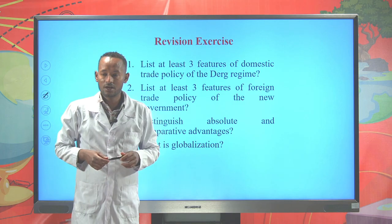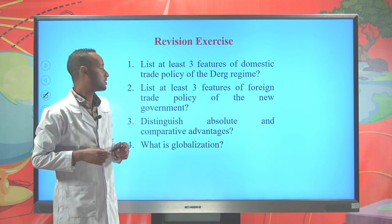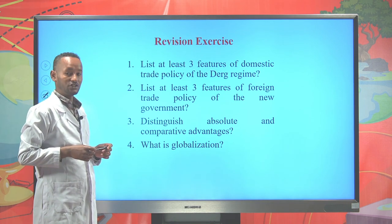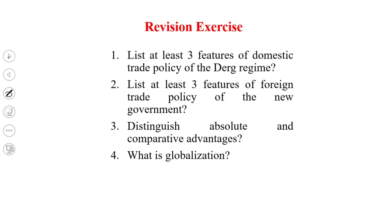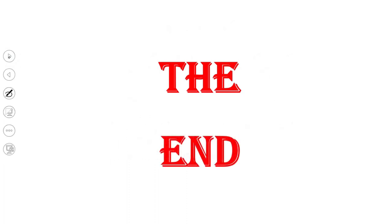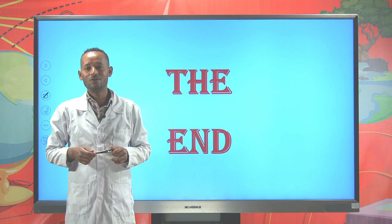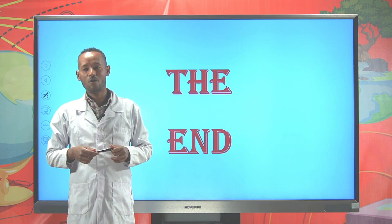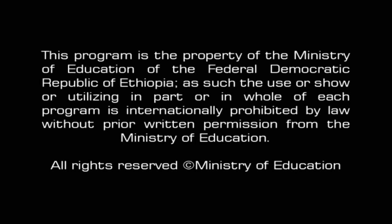Students, let me give you a revision exercise. First, list at least three features of the domestic trade policy of the DERG regime. Second, list at least three features of the foreign trade policy of the new government. Third, distinguish between absolute and comparative advantage. And finally, define globalization. This is all about the economics revision lesson. Stay safe, stay home. Thank you.